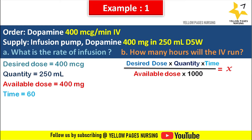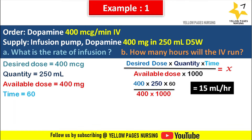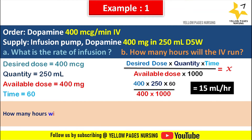We need ml per hour for the infusion pump. To convert 400 microgram per minute to mg per hour, we multiply 400 mcg per minute by 60. Applying this in the formula: 400 × 60 × 250 ÷ (400 × 1000) = 15 ml per hour. So we set 15 ml per hour in the infusion pump.